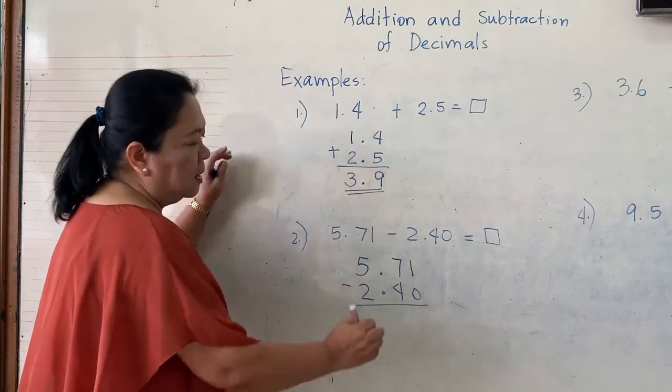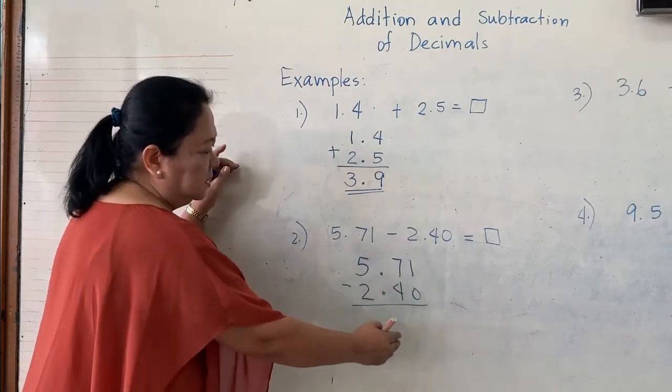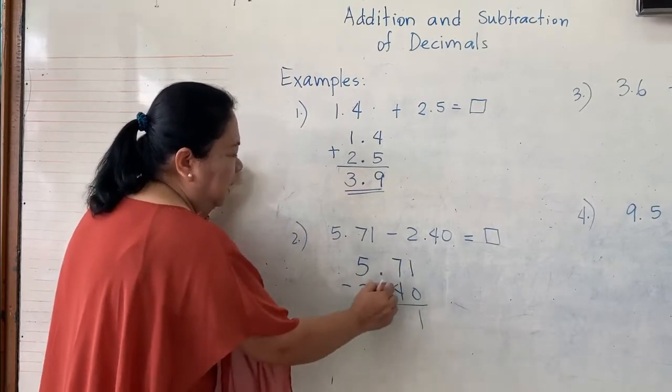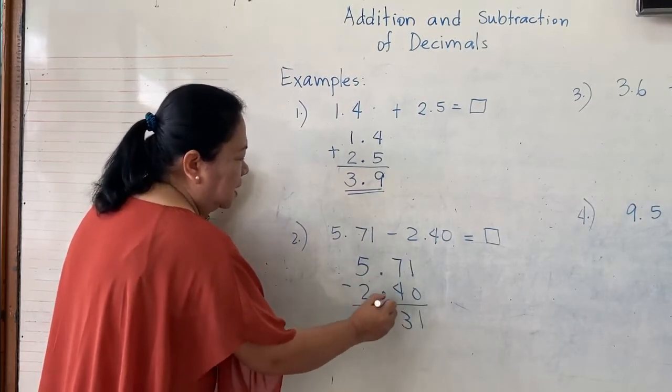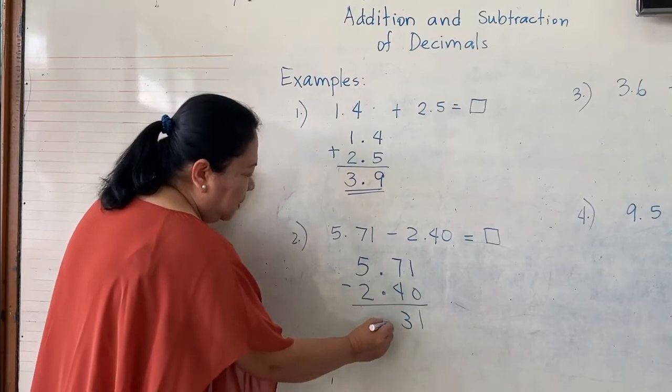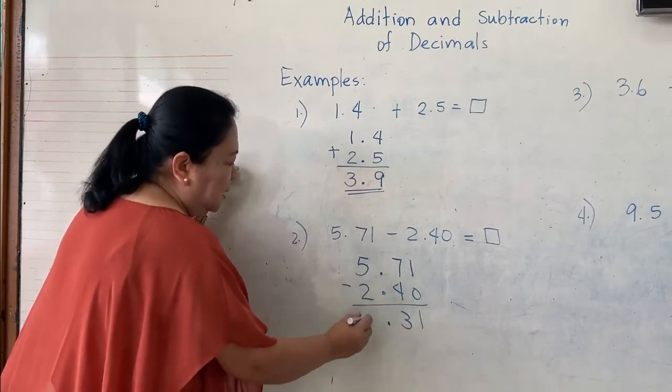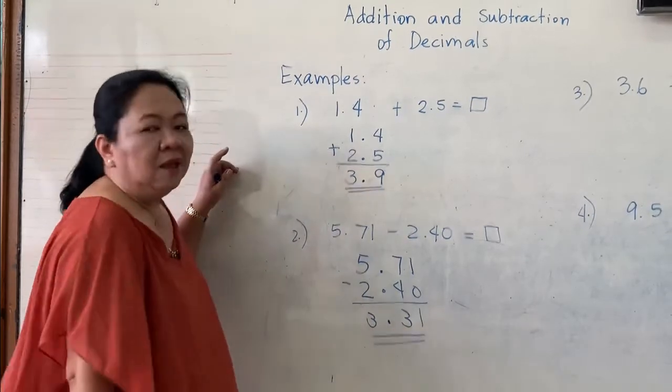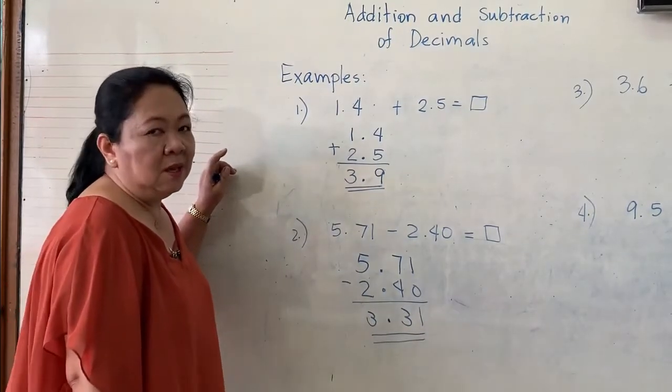Then, subtract from the rightmost digit again. 1 minus 0 is 1. 7 minus 4 is 3. And then, write the decimal point. 5 minus 2 is 3. Therefore, the answer is 3.31.